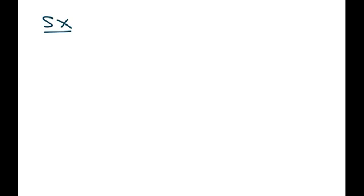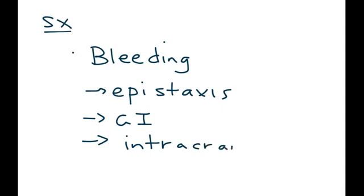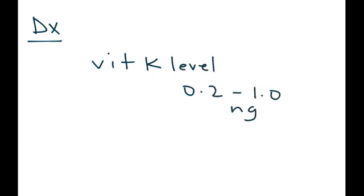Symptoms of vitamin K deficiency: the most common is bleeding, which can present as nosebleeding — known as epistaxis — a GI bleed, or, as previously discussed in hemorrhagic disease of the newborn, an intracranial bleed. Another physical exam finding is easy bruising. For diagnosis, you want to measure the vitamin K level, with a normal range of 0.2 to 1.0 ng/mL. You also want to measure the PT and the INR, and both of these will be elevated.